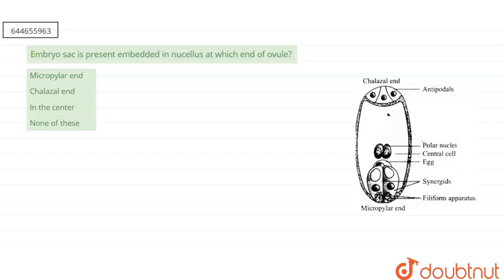Our question says that embryo sac is present embedded in nucellus at which end of ovule. First is micropylar end, second is chalazal end, third is in the center, and fourth is none of these.